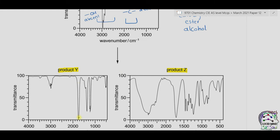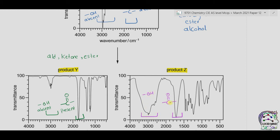From the given spectra, we can see that in product Y the carbonyl peak is now present at around 1700. And the broad peak between 2500 to 3000 is absent, so OH is absent. If carbonyl is present and OH is absent, it means it is not a carboxylic acid — it can be an aldehyde, ketone, or ester, and it is not an alcohol. In product Z, the carbonyl peak is present, and both carbonyl and OH peaks are present, so Z is a carboxylic acid.